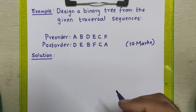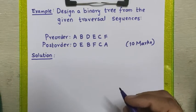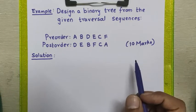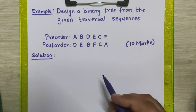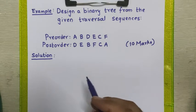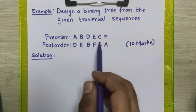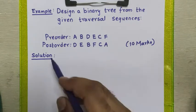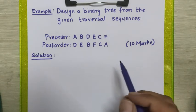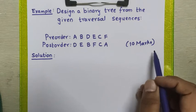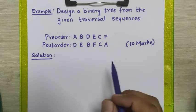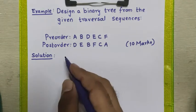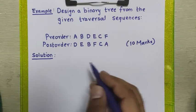Hello friends. In this video we are going to study how to design a binary tree from given pre-order and post-order traversal sequences. Consider these traversal sequences are given to us: pre-order and post-order. This question was asked in some university examinations for 10 marks. So how to solve this problem, we will see.